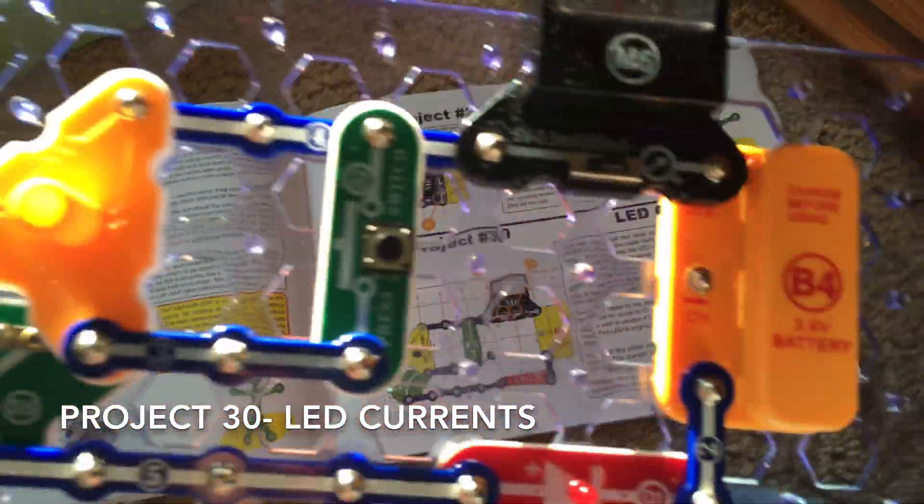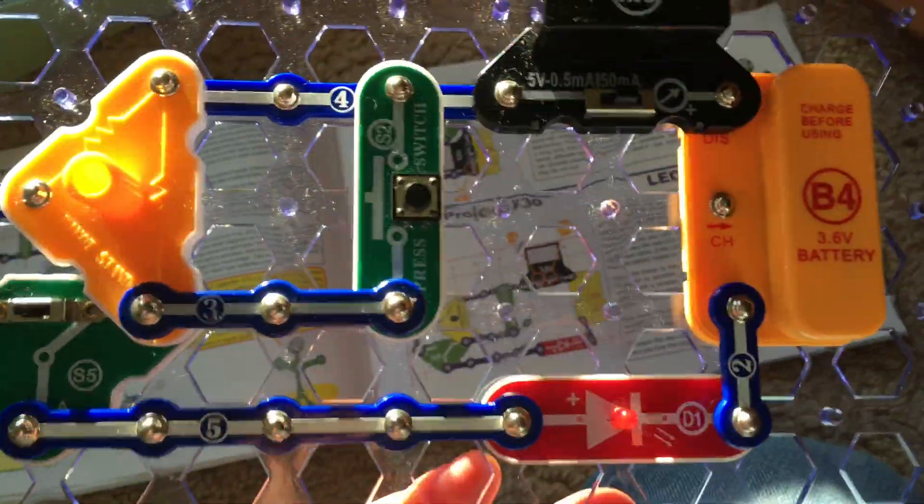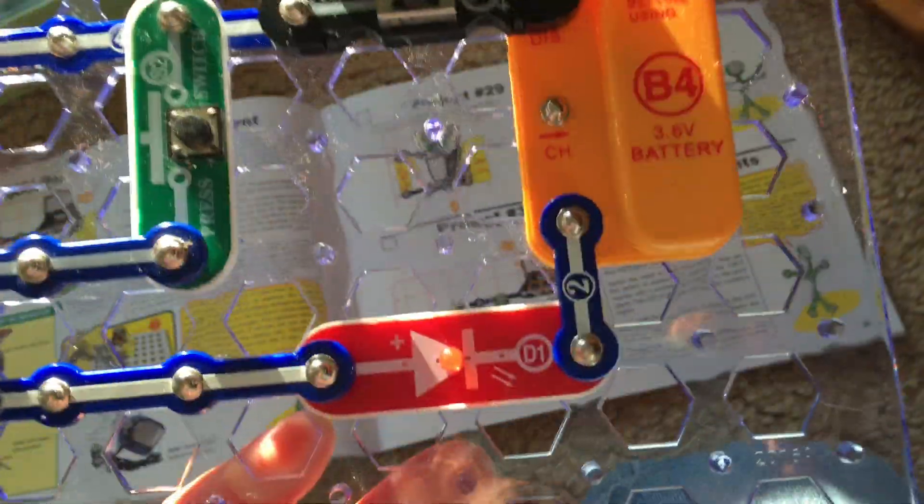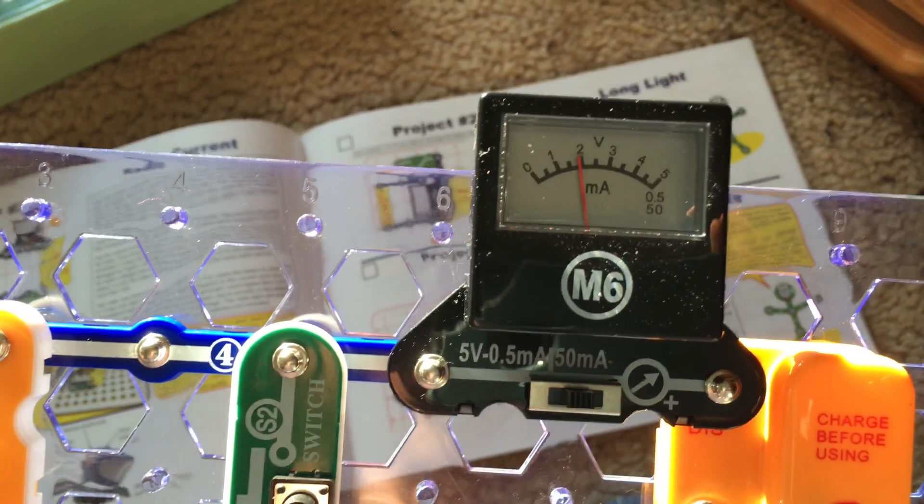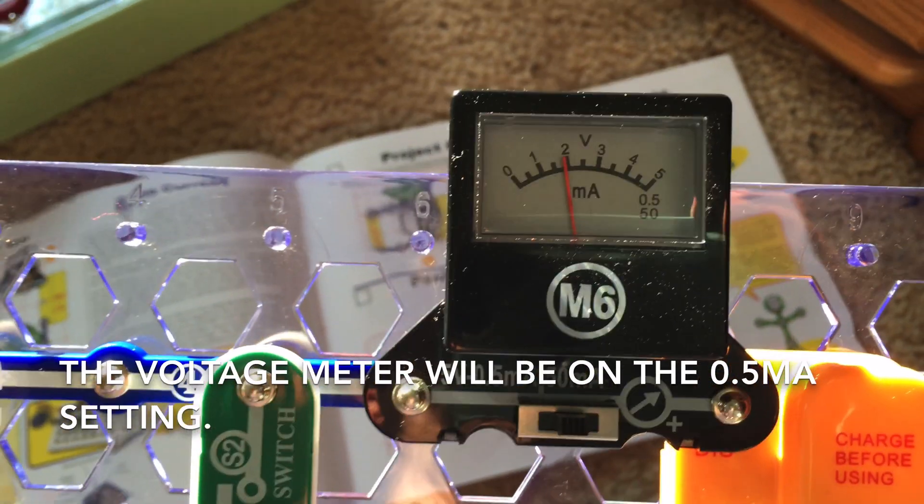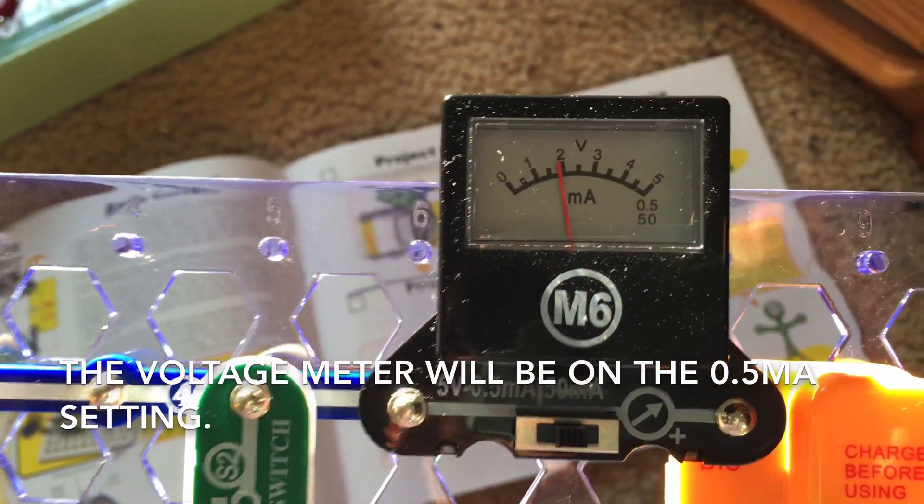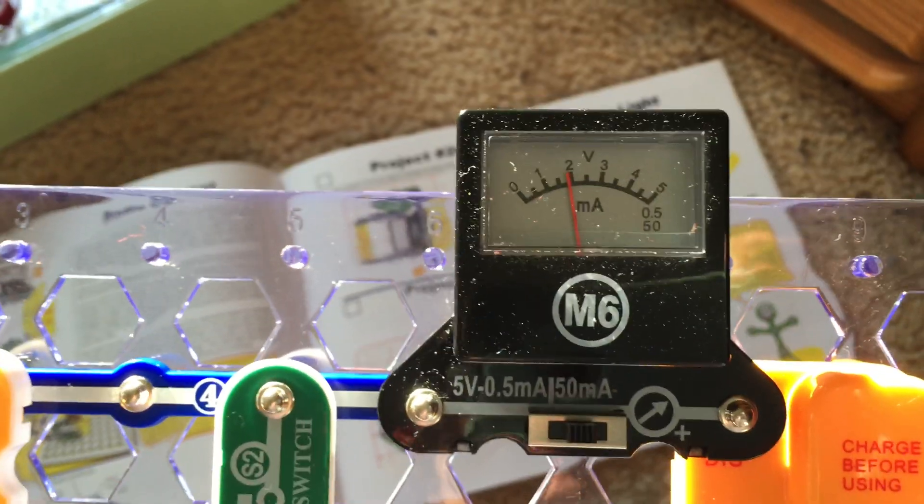For this project we are going to learn about current and resistors. We're going to use the red LED and for this project the voltage meter will be on the 0.5 milliamp setting to start.